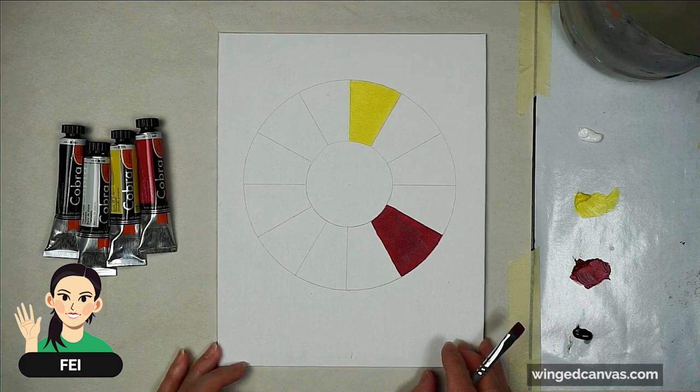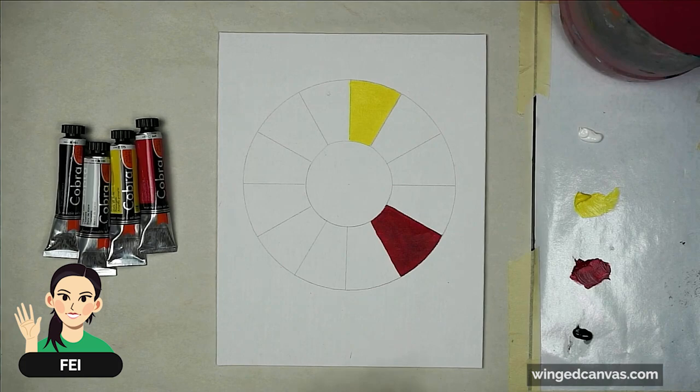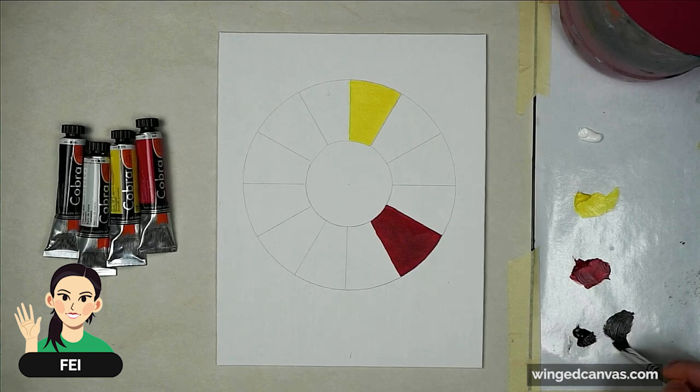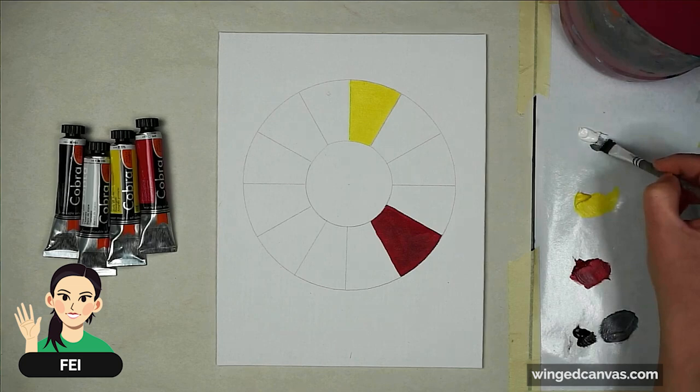Next, what we're going to do is mix a blue, but the blue is not going to be blue. It's going to be black and white, so it's actually going to be gray. However, it's going to be a slightly darker gray just because the natural value of blue is pretty dark. I'm just going to mix my white and my black. Try to match the value of the red.